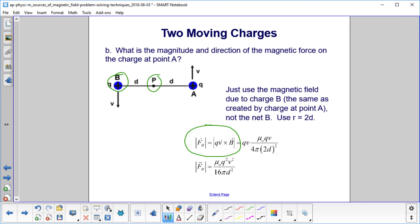So what is that? That is mu zero QV over four pi, right over here, times the distance between the two charges. So this time we have to put 2D in there, and you can see we have that. And then we carry out the algebra, and we get mu zero Q squared V squared over 16 pi D squared.